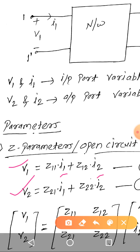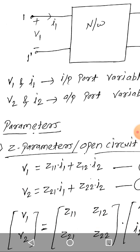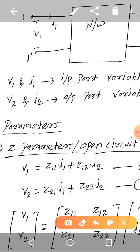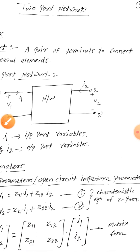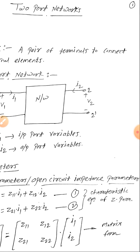The characteristic equations of the Z parameters are: the input port voltage V1 is equal to Z11·I1 plus Z12·I2. Similarly, V2 is equal to Z21·I1 plus Z22·I2. We need to memorize this. Z parameters give the expression for port voltages V1 and V2 in terms of port currents I1 and I2. These two equations are the characteristic equations of the Z parameter.